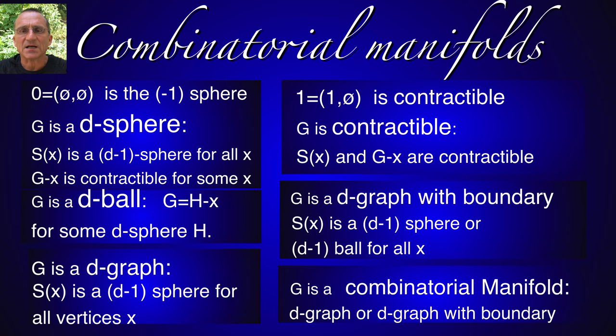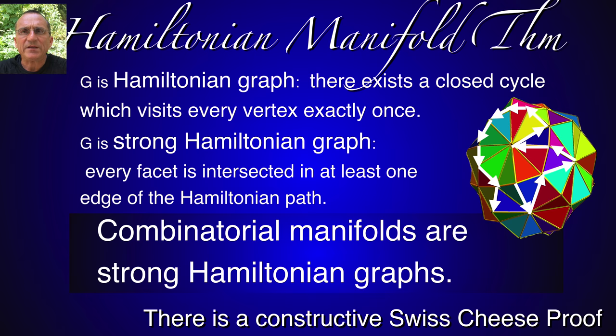A d-graph is a finite simple graph for which all spheres are d-1 spheres. A d-graph with boundary either has unit spheres which are d-1 spheres or unit spheres which are d-1 balls punctured spheres. A combinatorial manifold is a d-graph or a d-graph with boundary.